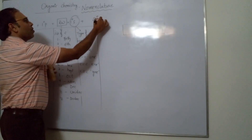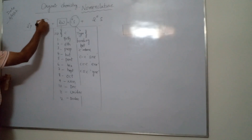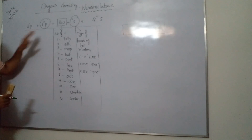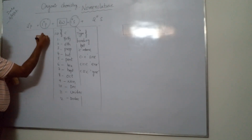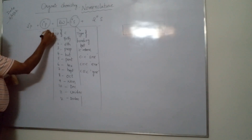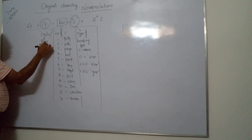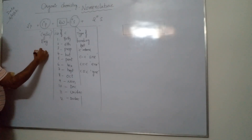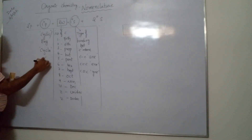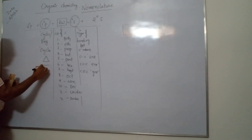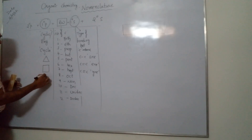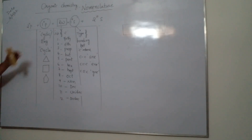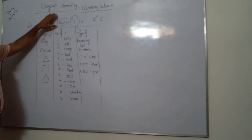Anything written before the root word is called the primary prefix. The primary prefix includes all cyclic compounds — that is, ring compounds. The word used is 'cyclo'. For example, you can have three-membered, four-membered, or five-membered rings. I will explain this again later.